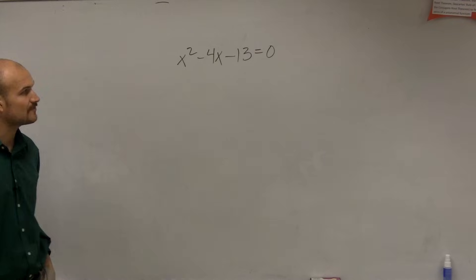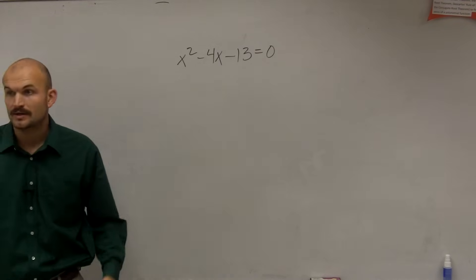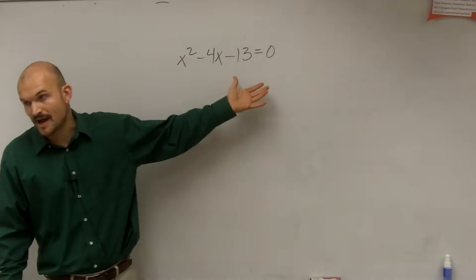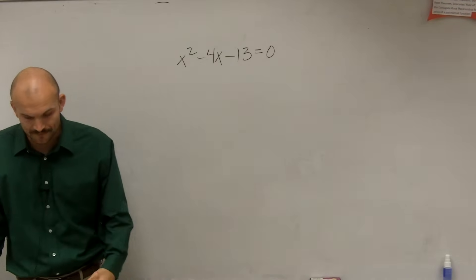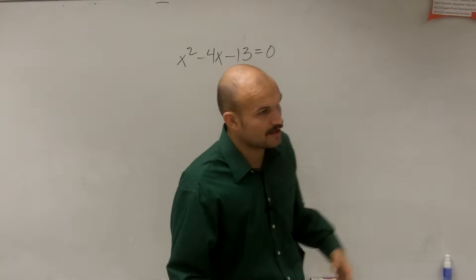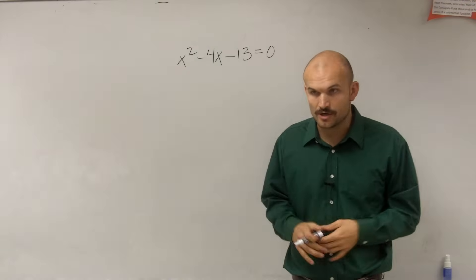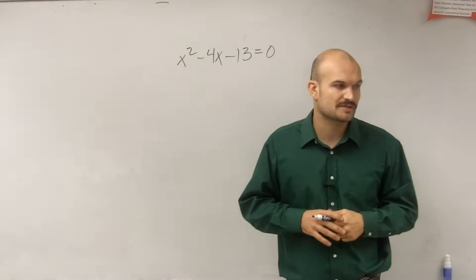So what we have is I have x squared minus 4x minus 13 equals 0. Now remember, you always want to see can you factor this? And unfortunately, this cannot be factored in our normal case that we've worked on. And it's said to solve by completing the square. Now remember, completing the square involves creating a perfect square trinomial. So you have to create a perfect square trinomial.